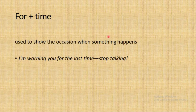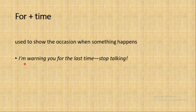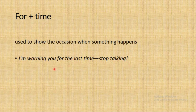Next: 'for' used to show the occasions when something happens — indicating a moment or opportunity when something occurs. 'I'm warning you for the last time, stop talking' — I've given chances before and this is the last time. You can also say 'I'm warning you for the second time' — so 'for' here marks which occasion or instance something is happening.